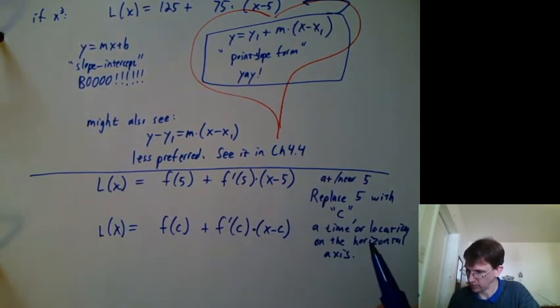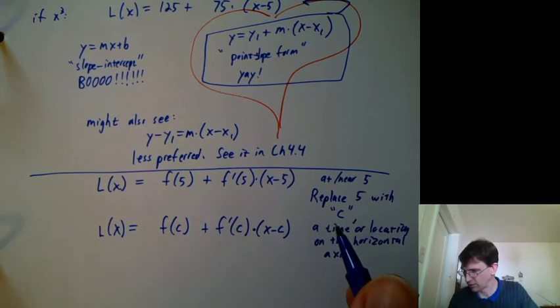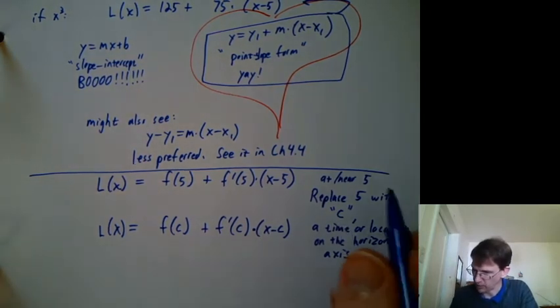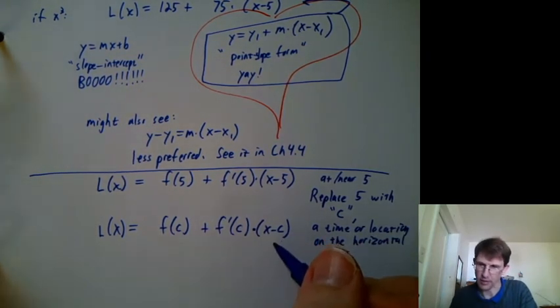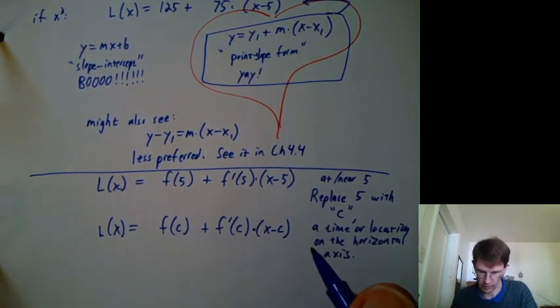So we could say L of x equals f of c plus f prime at c times x minus c. If this is your second time through calc 1, you might be remembering there's a time we use c in calc 1 a lot. But this is a lowercase c, and that other time is when we're doing integration, and that's an uppercase c. And they aren't really related to each other.